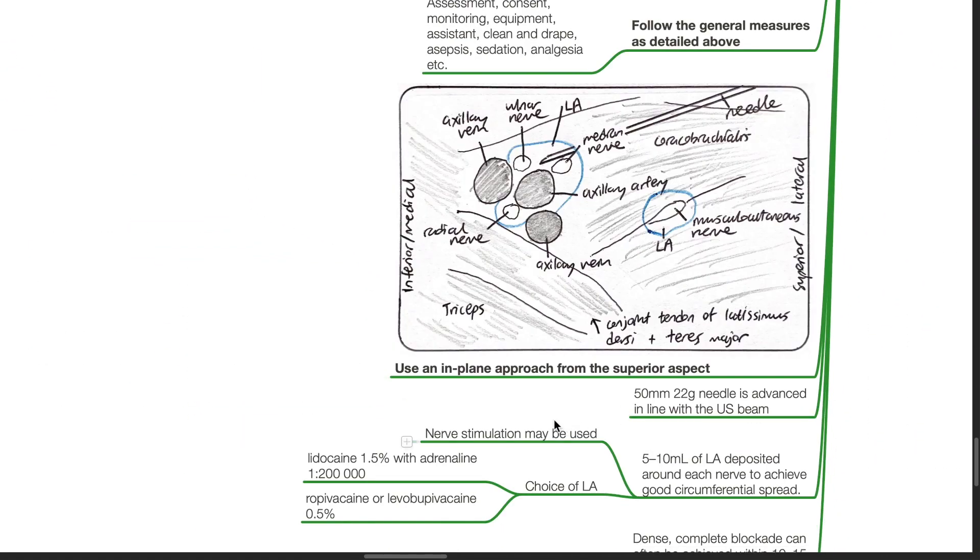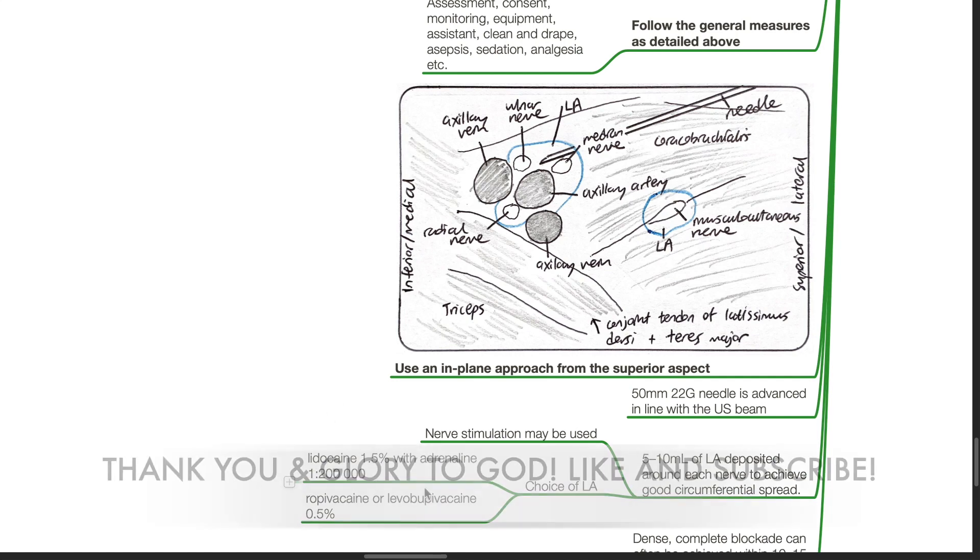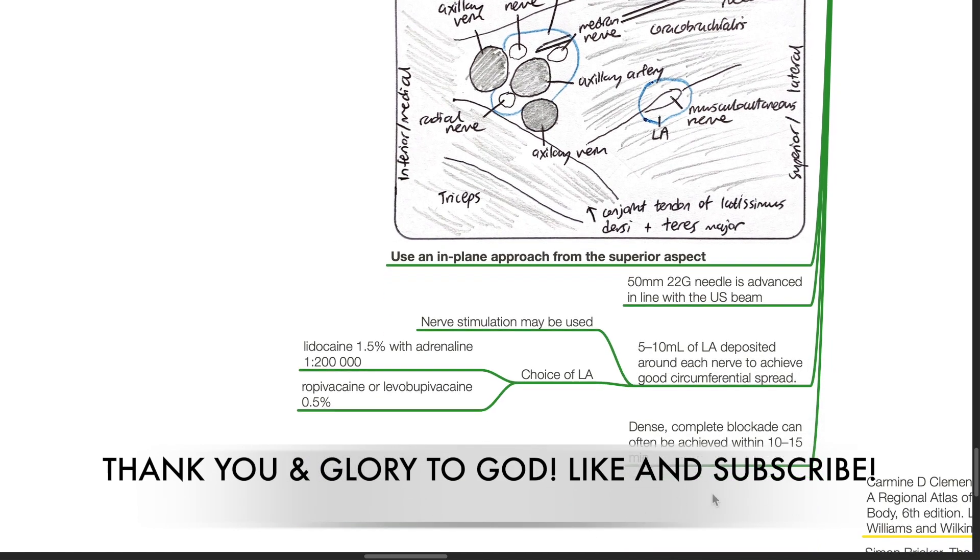Use an in-plane approach from the superior aspect. A 50 mm 22 gauge needle is advanced in line with the ultrasound beam. 5 to 10 mL of local anesthetic deposited around each nerve to achieve good circumferential spread. Nerve stimulation may be used. Choice of local anesthetic includes lidocaine 1.5% with adrenaline 1 in 200,000, ropivacaine or levobupivacaine 0.5%. Dense and complete blockade can often be achieved within 10 to 15 minutes.